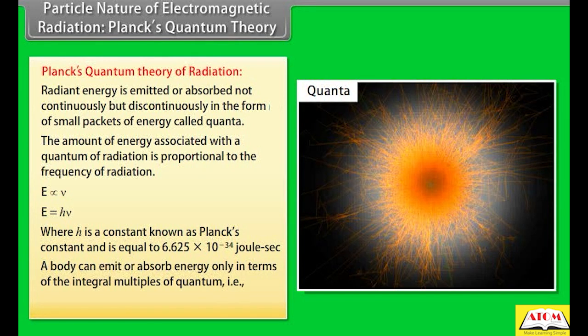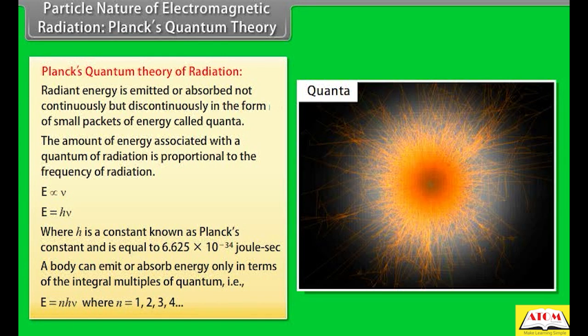A body can emit or absorb energy only in integral multiples of a quantum. That is, E = Nhν, where N = 1, 2, 3, 4, etc.